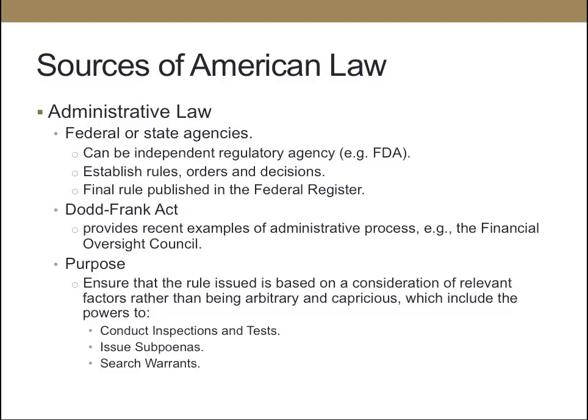The next source of American law is administrative law. This includes rules, orders, and decisions from administrative agencies at both the federal and state level. They could be independent regulatory agencies — for example, the Food and Drug Administration. The final rules are published in the Federal Register. An example of this would be the Dodd-Frank Act. The purpose of administrative law is to ensure that rules are based on consideration of relevant factors rather than being arbitrary and capricious.